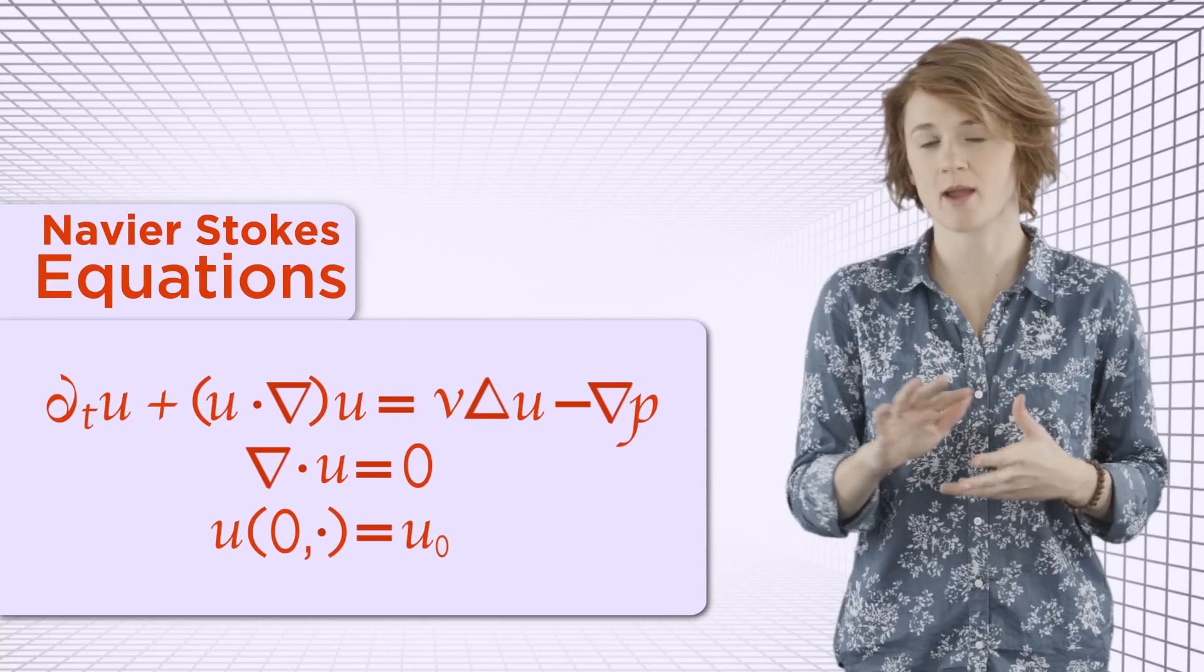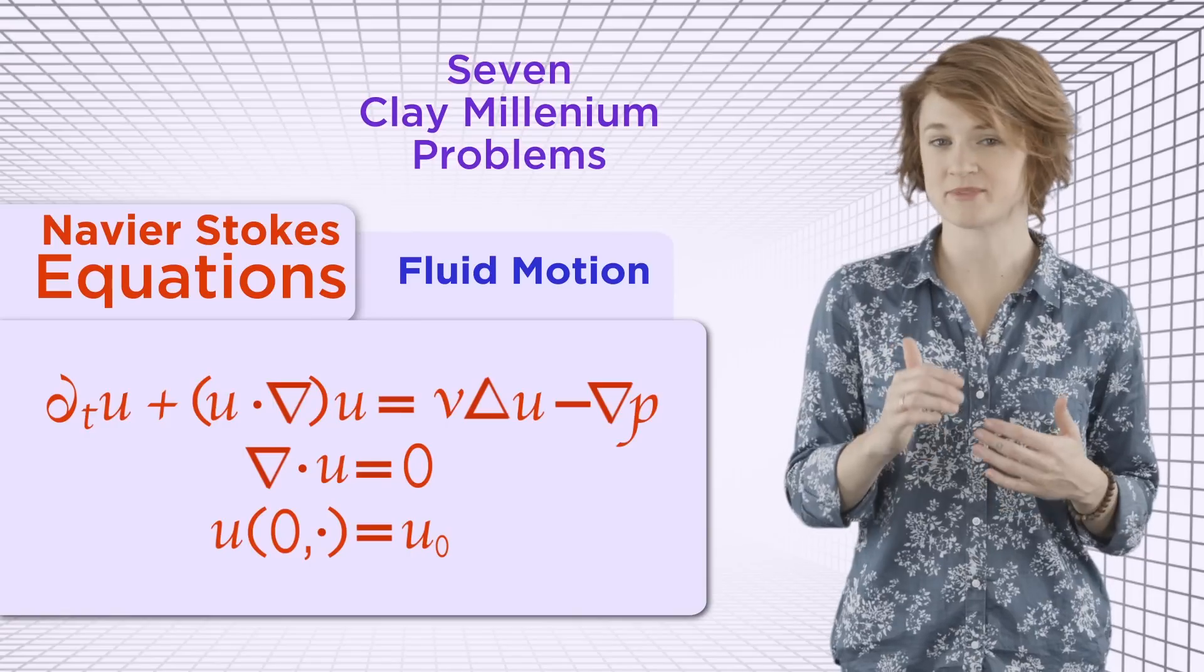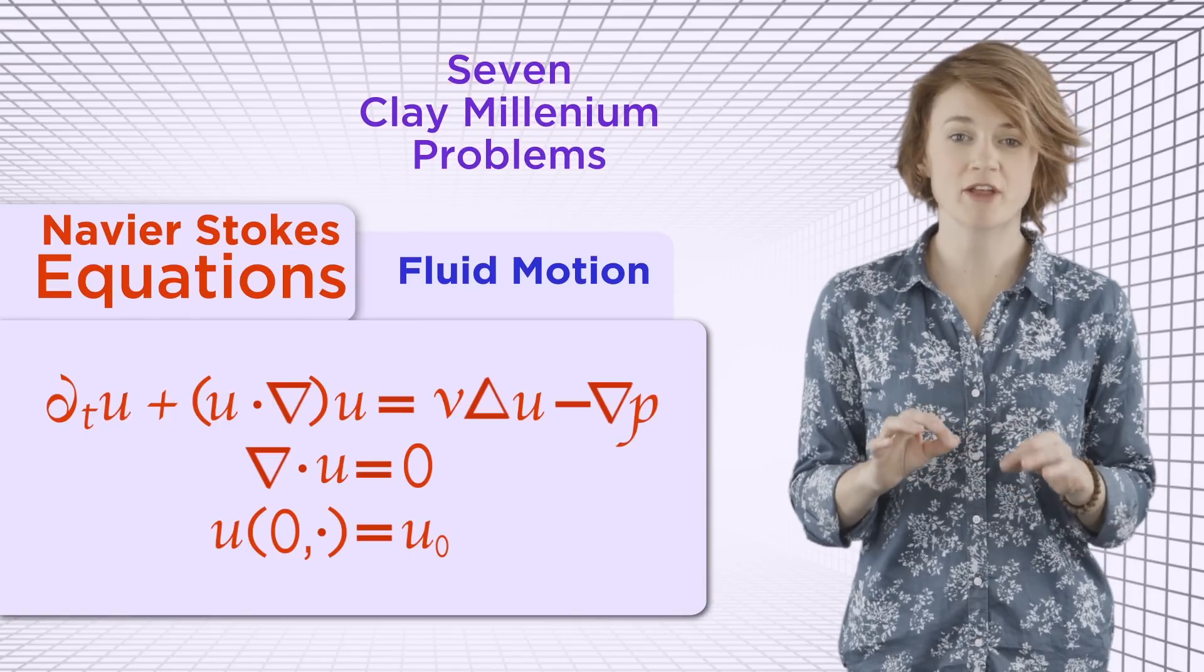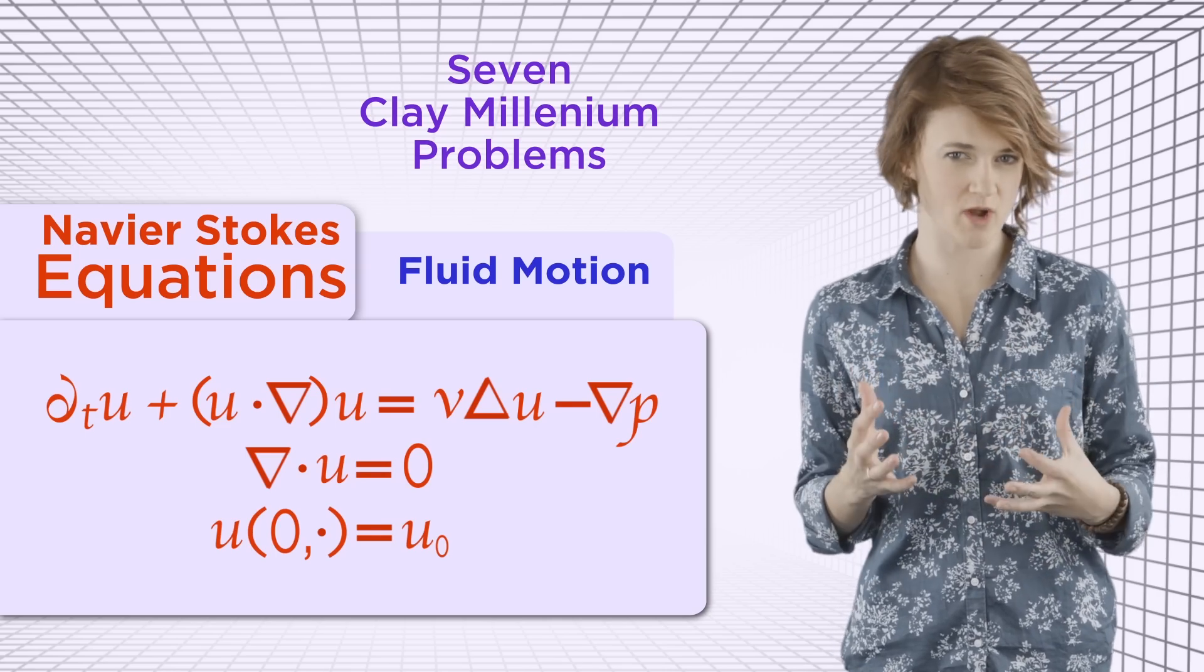In fact, a million dollar prize in mathematics hinges on a finite time blowup in water. The Navier-Stokes equations describe fluid motion, and one of the seven clay millennium problems in mathematics is to show whether or not these equations allow fluid to move in wild and unexpected ways.